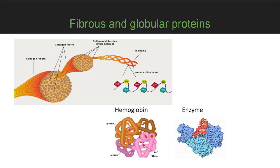According to their three-dimensional structure, we can divide proteins into two types: fibrous proteins and globular proteins. Fibrous proteins have long sequences of amino acids that form, in most cases, structural proteins like collagen or contractile proteins in muscles. Globular proteins have a more compact structure and in most cases work as carrier proteins like hemoglobin, or as enzymes.